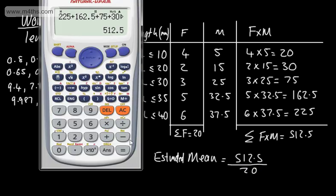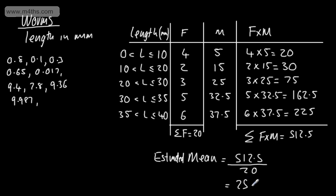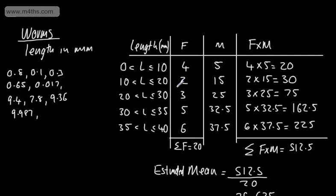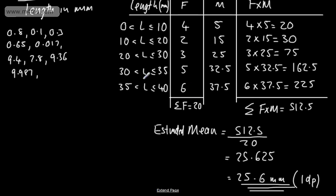Dividing 512.5 by 20 gives us 25.625. Rounding to one decimal place, that's 25.6 millimetres. That is an estimated mean average for the length of each worm bred. Is it realistic? It's not negative, and it's not bigger than 40 — it sits logically somewhere in the middle. The idea of a mean average is to find a central value, and 25.6 mm correct to one decimal place is our estimated mean.